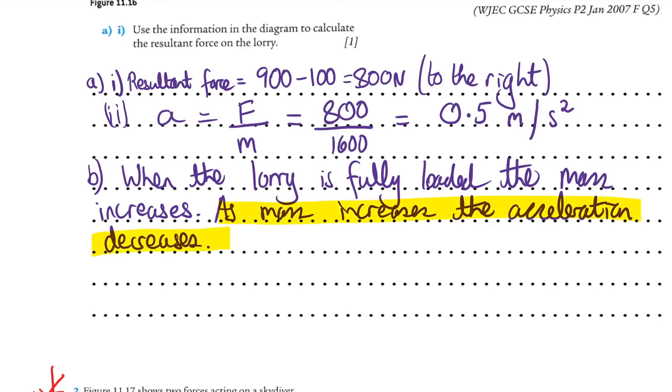You can show that another way from the equation. Acceleration is force over mass. We're saying the force is constant. Therefore, we can say that acceleration is inversely proportional to mass, meaning as the mass goes up, the acceleration comes down.